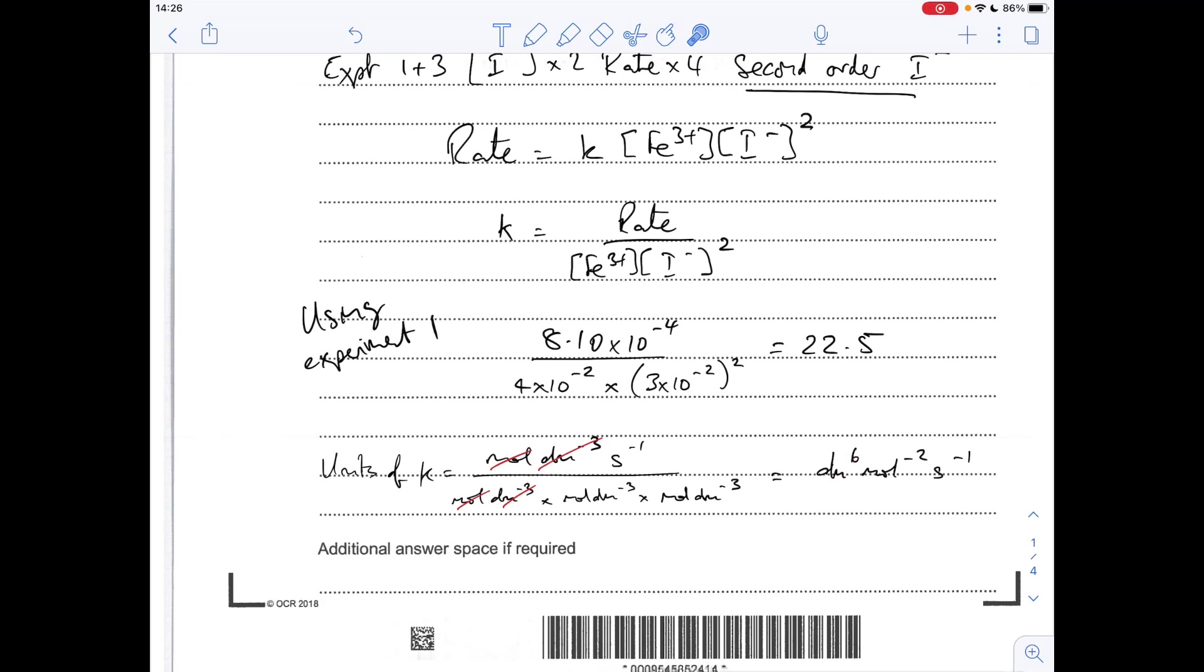Seconds to the minus 1, we're already on the top, so they stay as they are. Conventionally, you're meant to put your positive powers first, that's why I've written dm6 first, before mole minus 2. But if you've put them the other way around, that's fine.